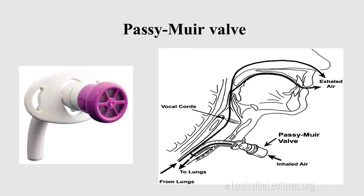Remember when to deflate the cuff in a patient with a tracheostomy. If you put a patient on a T-piece trial in the ICU — trying to extubate a patient who has a trach — you should deflate the cuff. Because if the cuff is inflated and the T-piece becomes obstructed, there is no airway. So you must remember to deflate the cuff — that's very important.